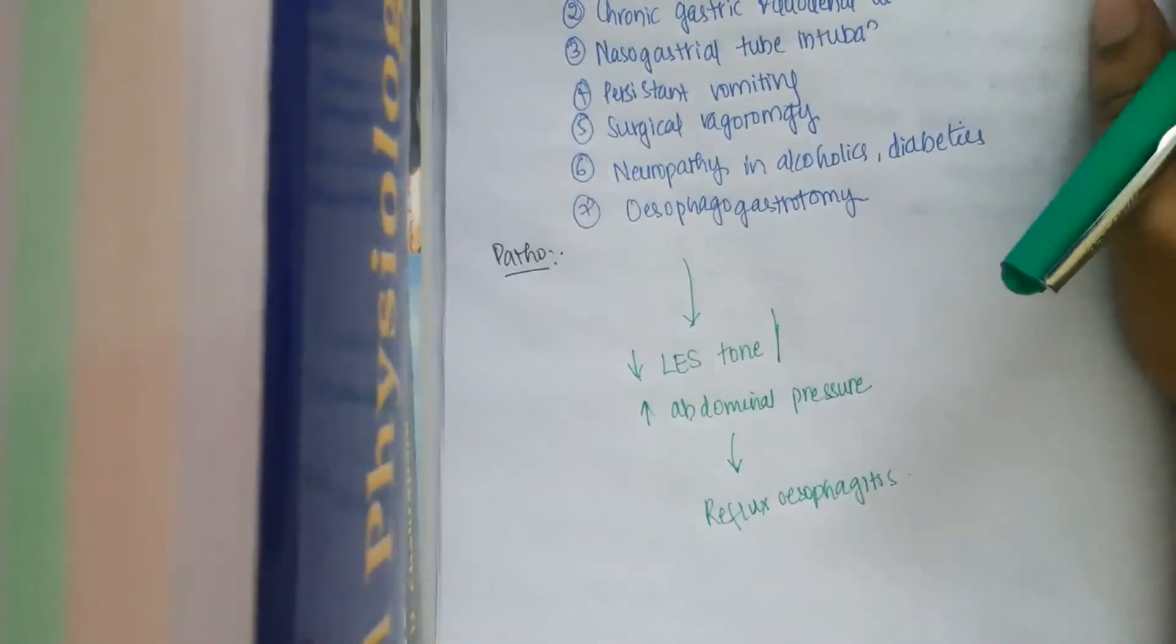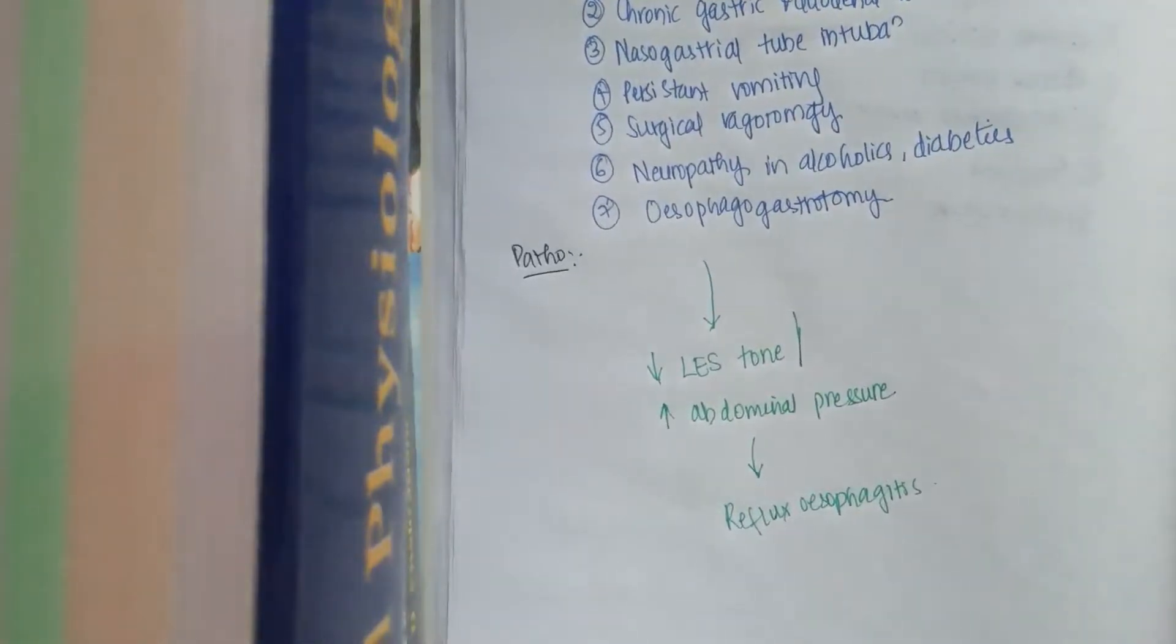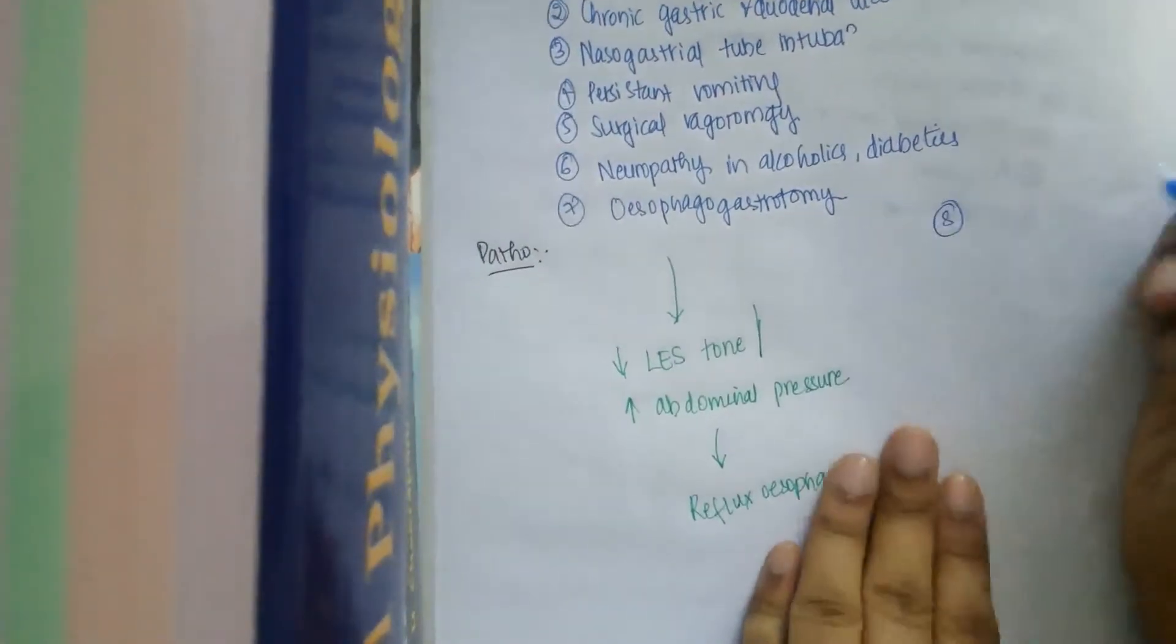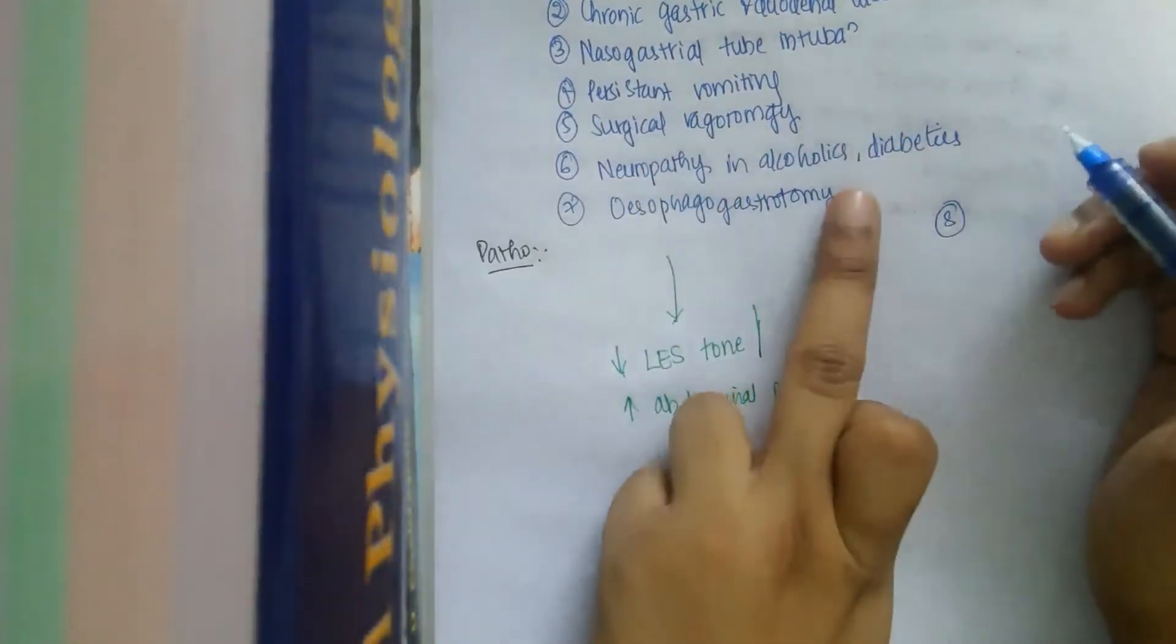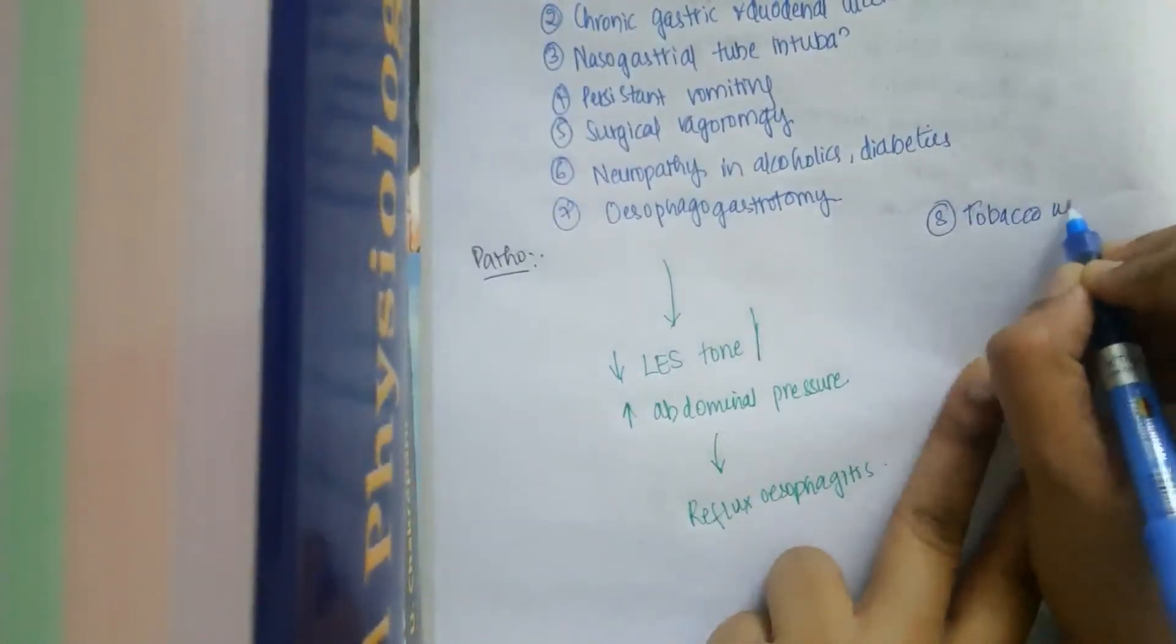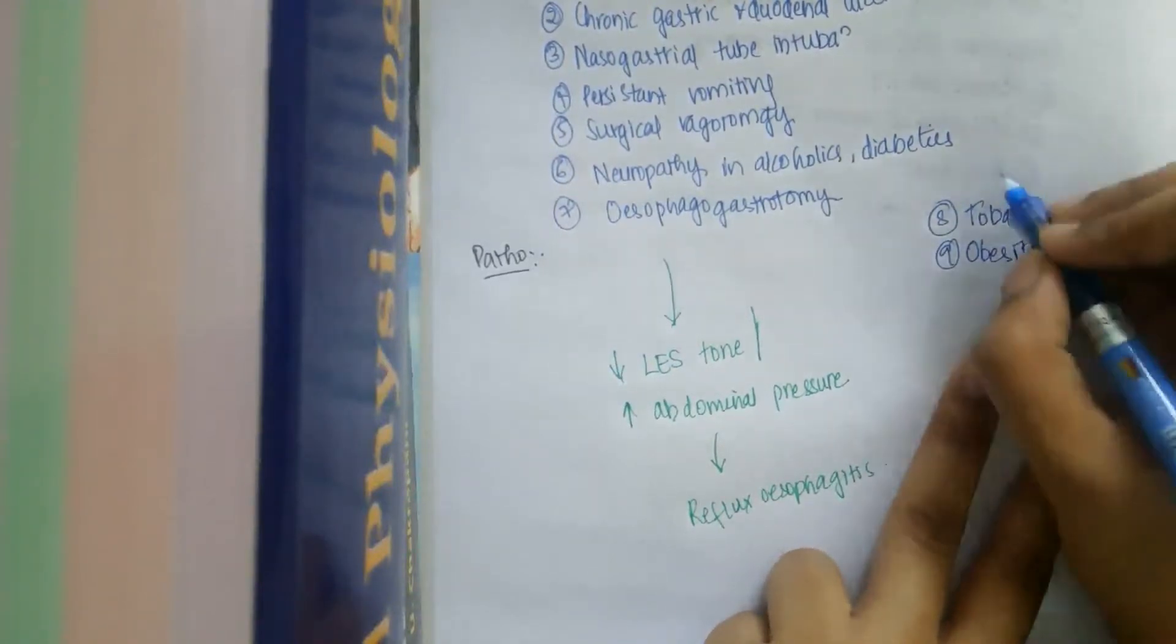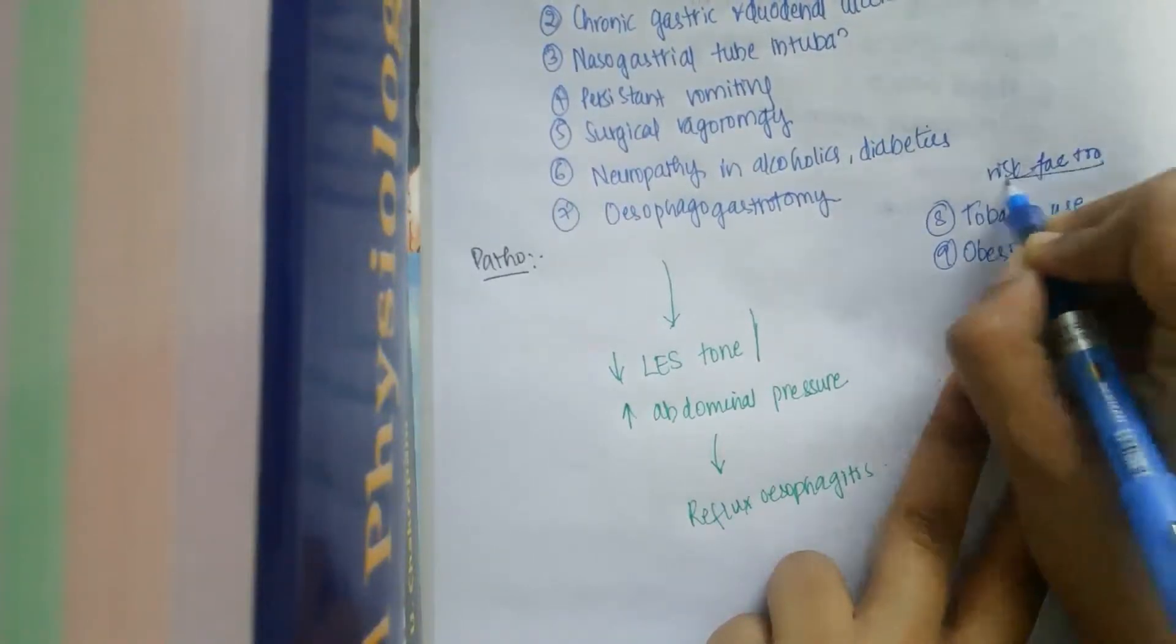Along with this, there are some other risk factors which may cause the reflux esophageal disease. There is age, alcohol I have already mentioned, tobacco use may be a risk factor, and obesity. These are risk factors basically.